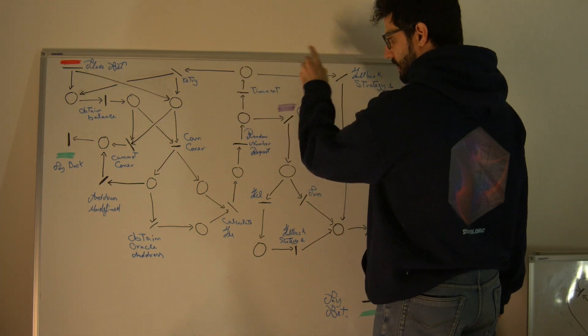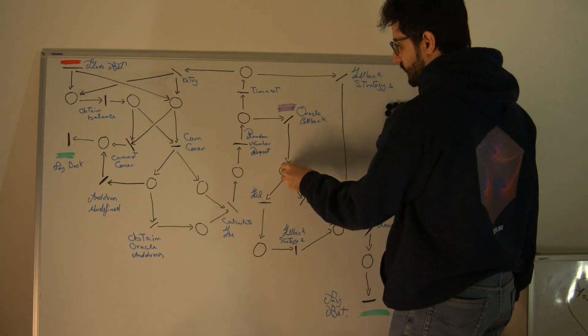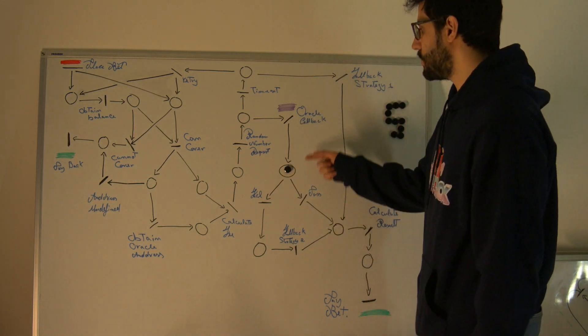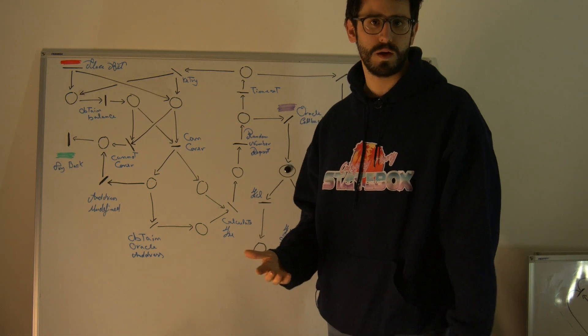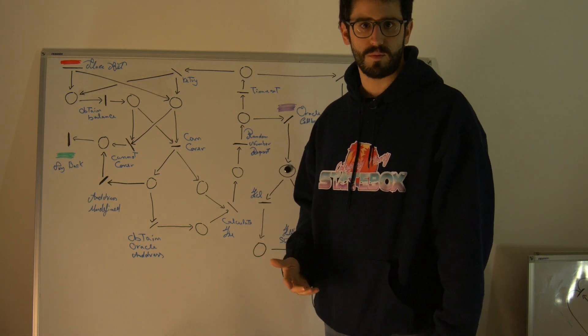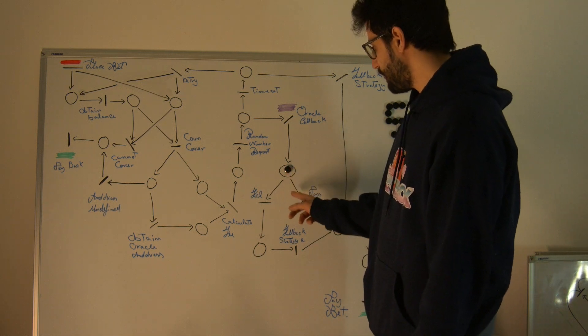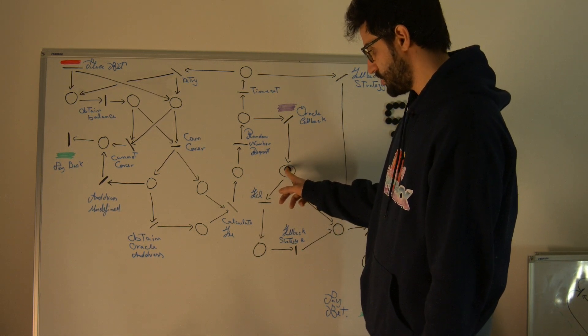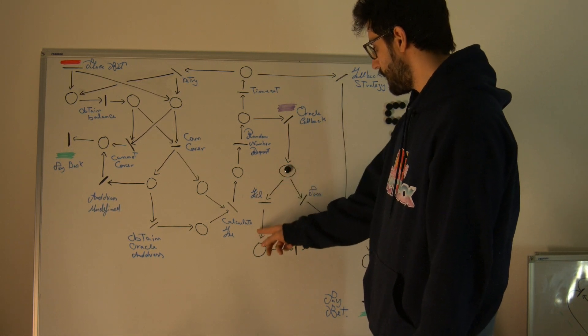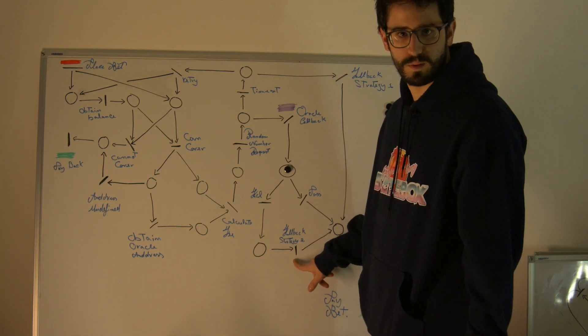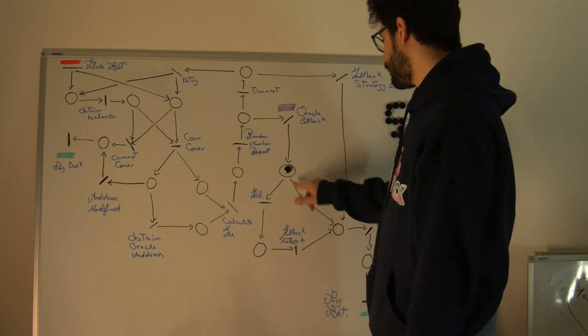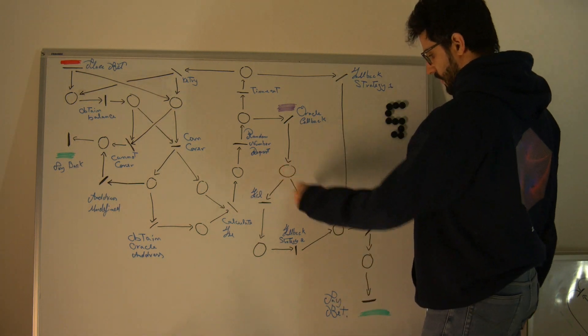If the Oracle calls us back, then we are here. Usually the random number from the Oracle is provided along with a proof to show that the random number is not tampered with. So we can verify this proof, check it, and if the proof fails, then again we have to use some sort of fallback strategy. If the proof passes, then no problem, we are here.